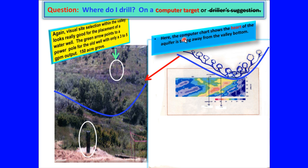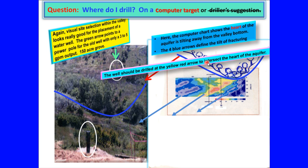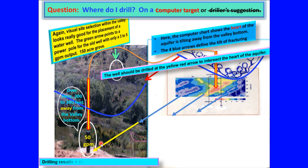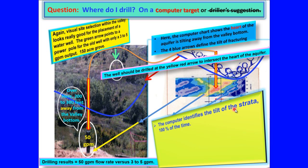Here, the computer chart shows the heart of the aquifer is tilting away from the valley bottom. The four blue arrows define the tilt of fracturing. The well should be drilled at the yellow-red arrow to intersect the heart of the aquifer, transposed over here, two to three hundred feet away from the valley bottom. Drilling results equals fifty gallon per minute flow rate versus three to five gallon per minute output. The computer identifies the tilt of the strata one hundred percent of the time.